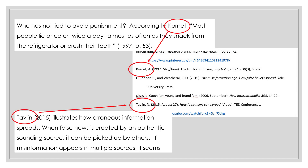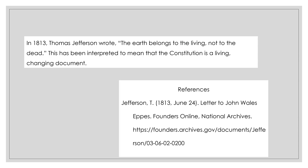The main purpose of an in-text citation is to lead you to the full citation in the reference list. In case you're wondering, yes, you could use all the information in your text, so you wouldn't need a narrative citation. It still leads you to the right citation in the reference list.